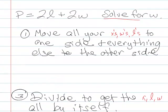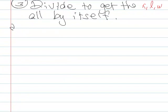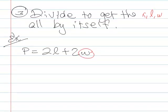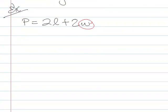So we have this p equals 2l plus 2w solving for w. So most examples, you only need steps one and three, which is the only one I want to talk about right now. This is what we want to solve for. So step one says move all of everything that you're solving for to one side and everything else to the other.